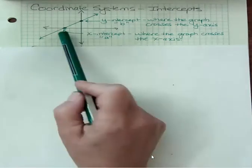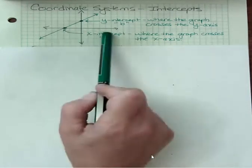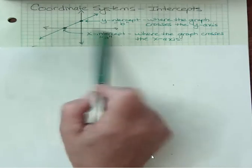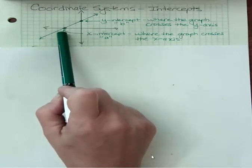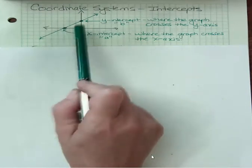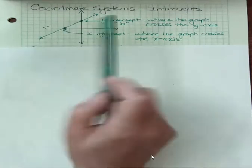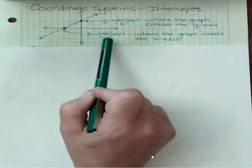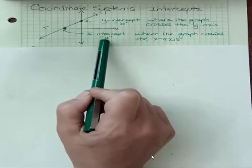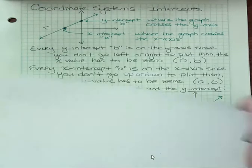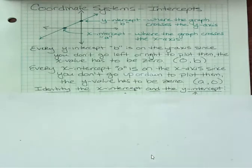Then we have an x-intercept. An x-intercept is where the graph would cross the x-axis. So those two points that fall onto the axis, those are the two intercepts. The x-intercept is abbreviated with the letter a. Let me give you a couple more things about the intercepts here.